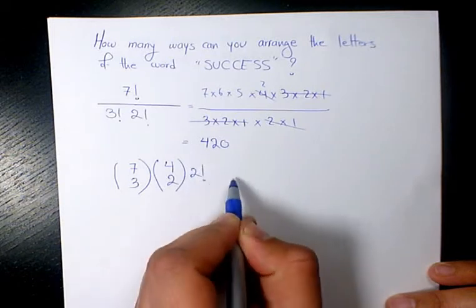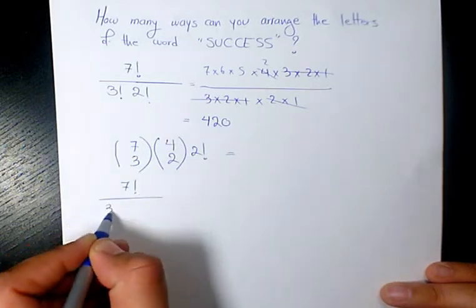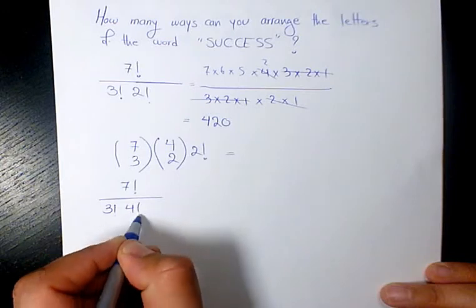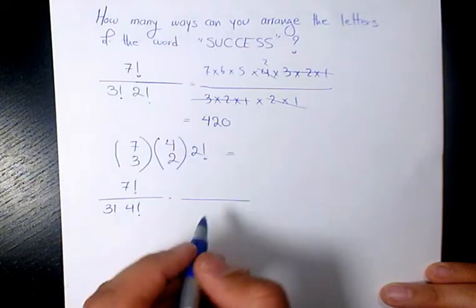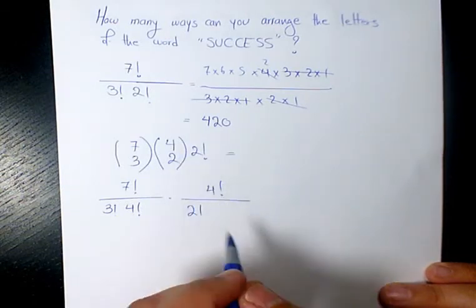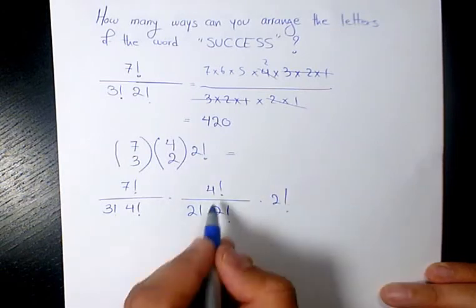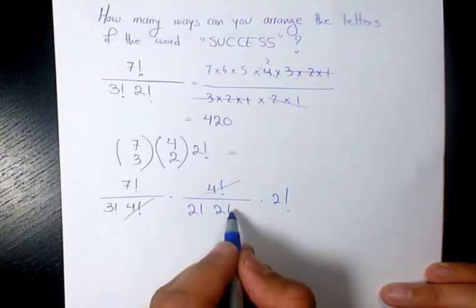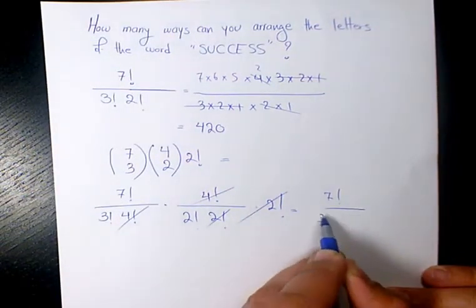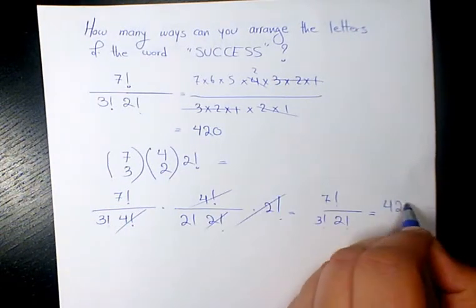Let's solve it this way. It's gonna be 7!/(3!×4!), then 4!/(2!×2!), times 2!. These two 4! cancel out, these two 2! cancel out. It's gonna be 7!/(3!×2!), which is exactly the same thing, and it's going to be 420.